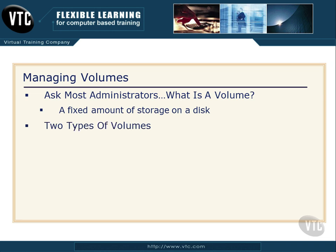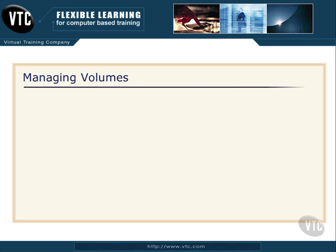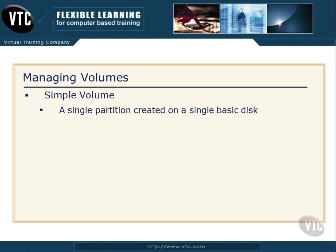There are two types of volumes available in Windows Server 2012: a simple or a spanned volume. Let's start off with the simple volume. With a simple volume, you can create it, but all the space has to be from a single partition on a single basic disk.